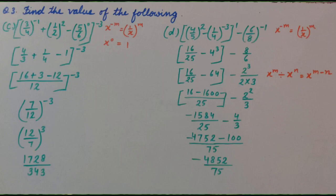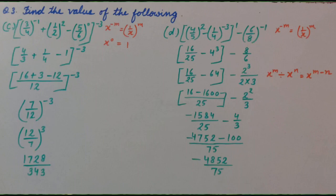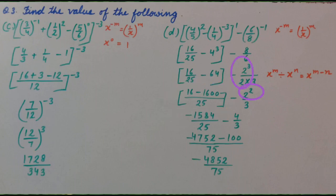Next step: 16 upon 25 minus 64 — because 4 raise to the power 3, when we solve it, is 64. Minus 8 and 6 are different composite bases, so we will prime factorize and write them in exponential form. It is 2 cube upon 2 into 3. We can see 2 and 2 are same bases and division is there, so we can use the law: x raise to the power m divided by x raise to the power n equals x raise to the power m minus n. We get 16 minus 1600 upon 25 in bracket, minus 2 raised to power 3 upon 2. When we solve, it is 2 raised to power 2 upon 3.